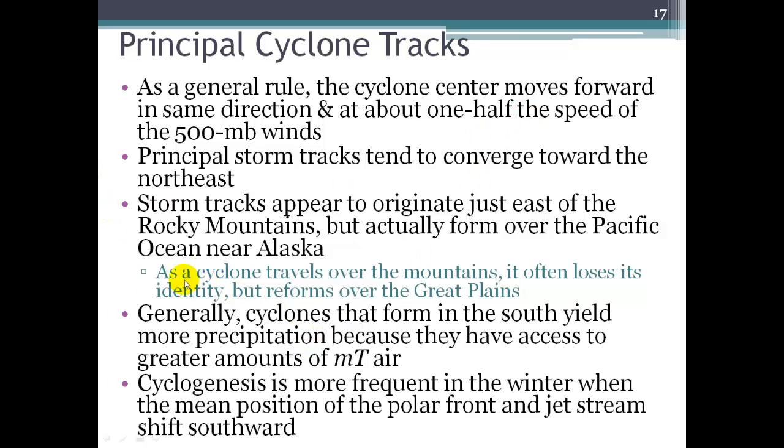Storm tracks appear to originate just east of the Rocky Mountains, but they actually form over the Pacific Ocean, way up by Alaska. And as that storm travels over the Rocky Mountains, it kind of loses its identity, but then it regroups once it crosses the mountains and makes it to the Great Plains.